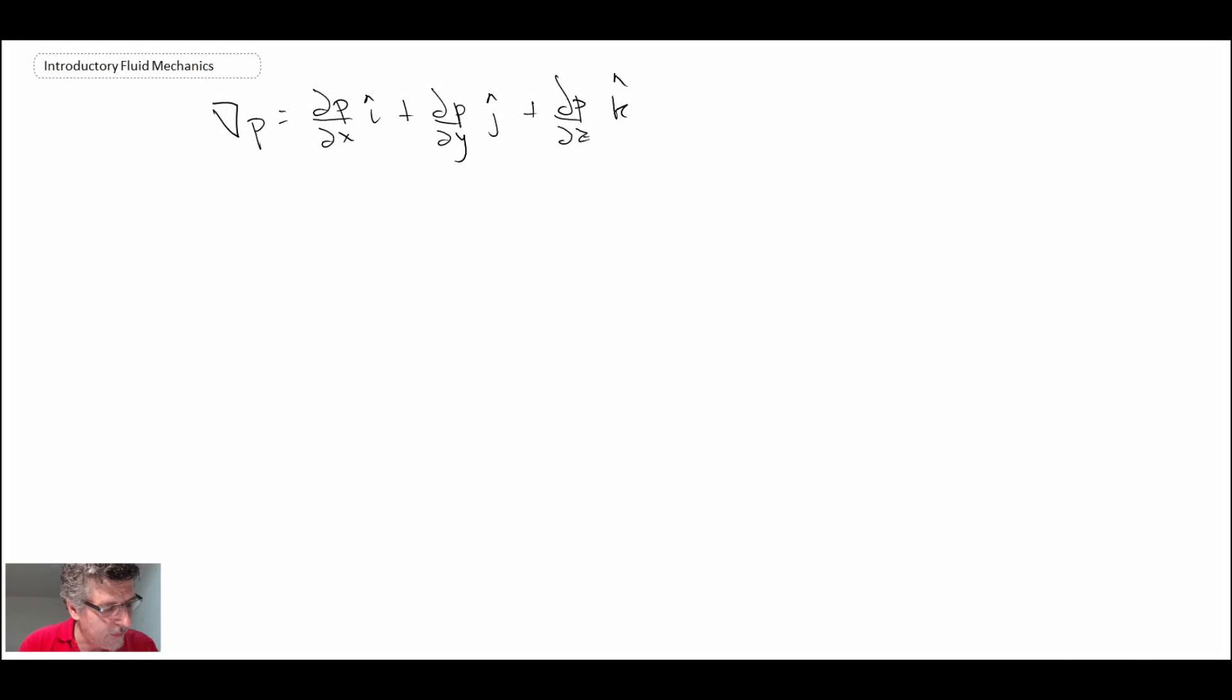We can rewrite this, so there's the gradient operator. We can rewrite our surface forces due to pressure in that manner. Then I'm going to divide both sides by DV and move the minus sign over, so I have the gradient of P on the left. That will be equal to DFS by DV, and I'm going to define this as a new force, little f.